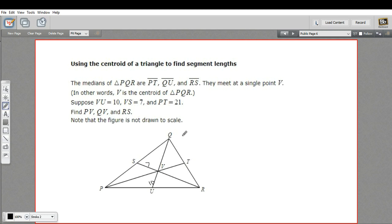And PT, that's this whole thing, is 21. So that is 21. And we want to find PV, QV, and RS. Well, let's take this a piece at a time.